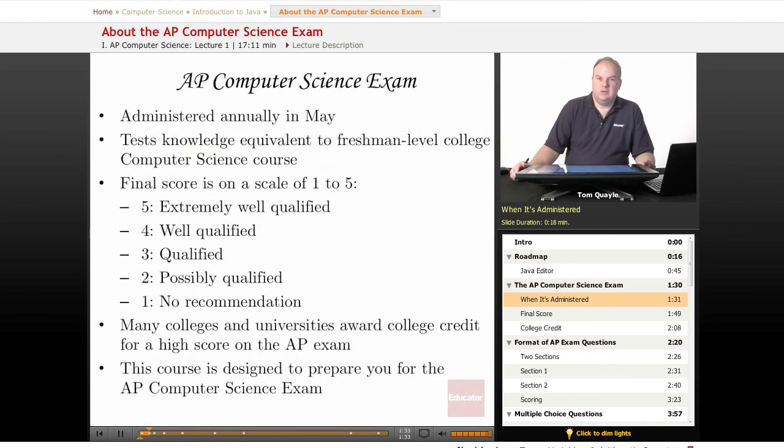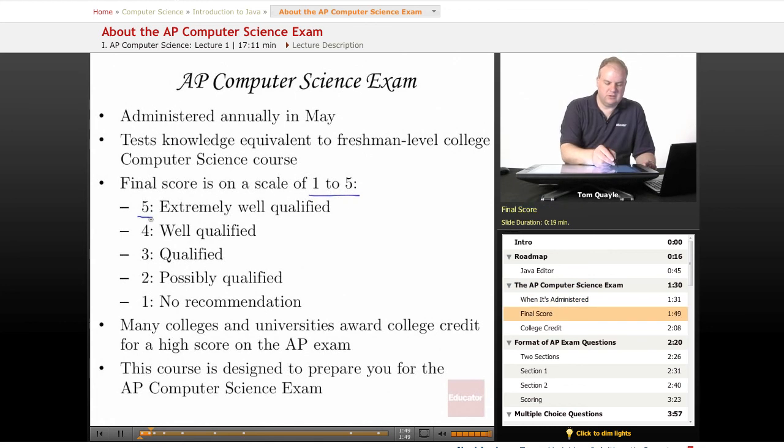The AP Computer Science exam, like all AP exams, is administered annually in May and it tests knowledge that's considered equivalent to a freshman level college computer science course. Like other AP exams, your final score is on a scale of one to five, with five being extremely well qualified and one indicating no recommendation. Many colleges and universities award college credit for a high score on the AP exam.